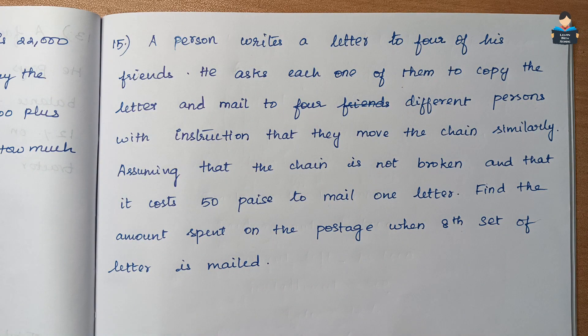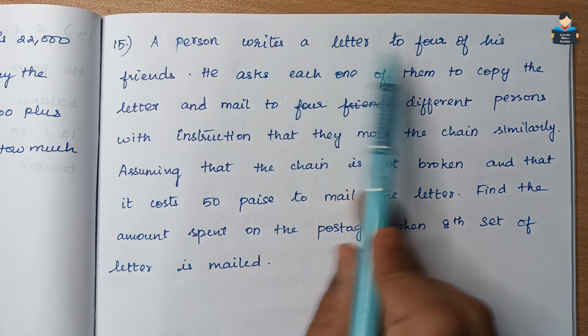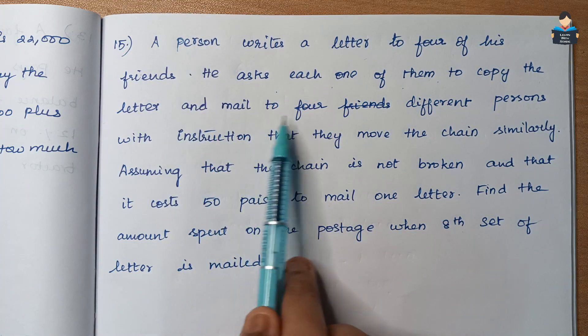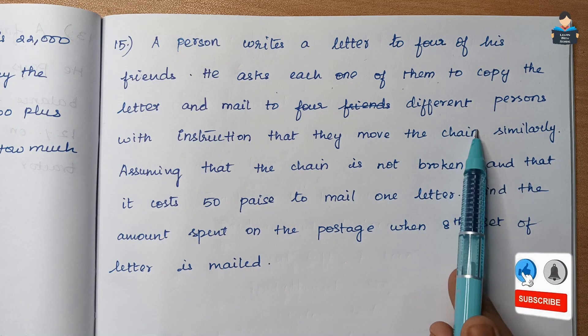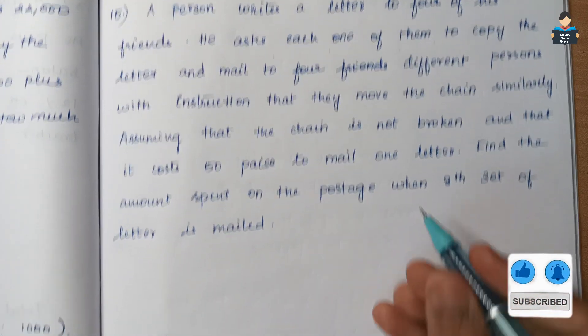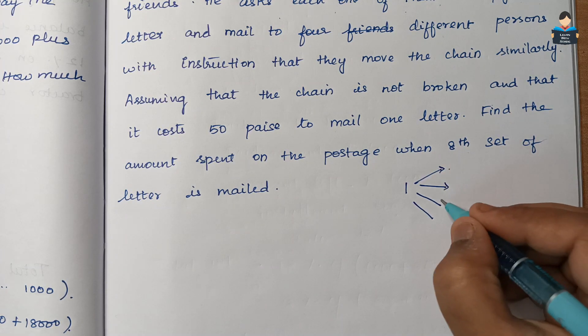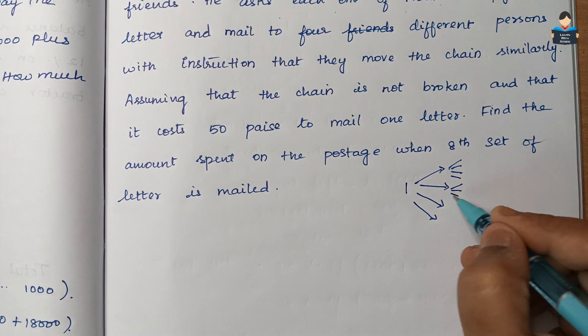Hello everyone, welcome to our channel. In this video, Class 11 Sequence and Series, Chapter Question Number 15: A person writes a letter to four of his friends. He asks each one of them to copy the letter and mail to four different persons with instruction that they move the chain similarly.